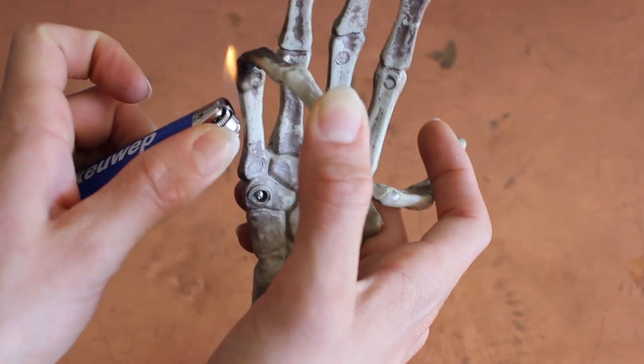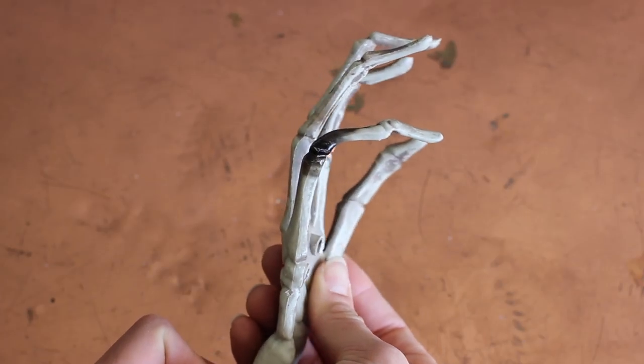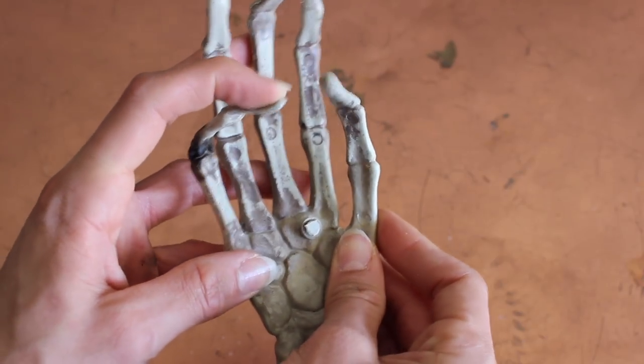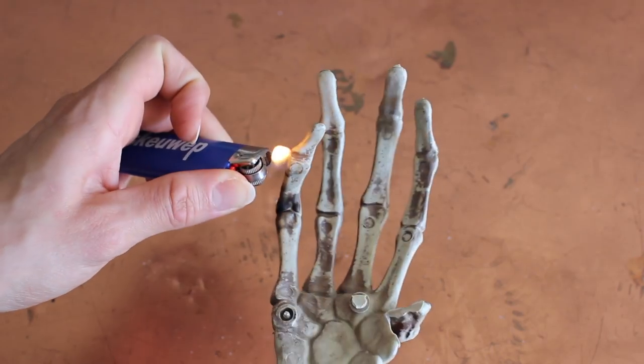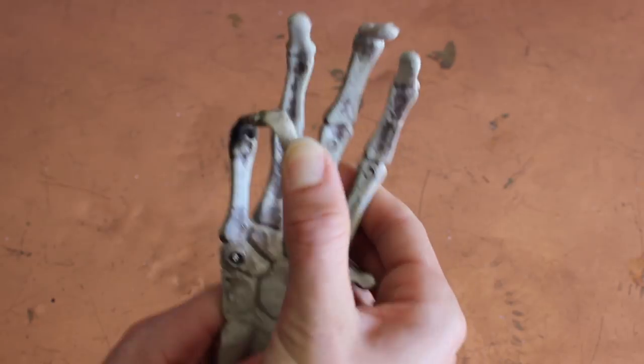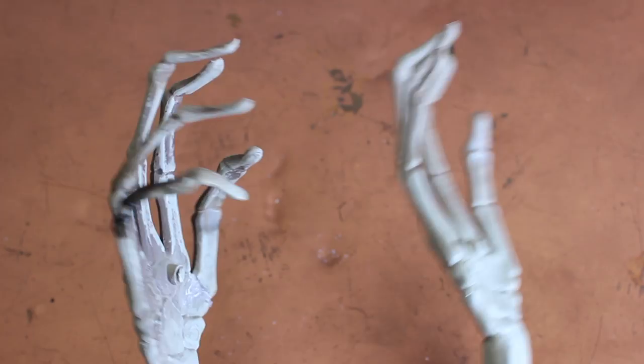So I took a lighter and I had a mask on, and you should do this with supervision if you're not old enough to be using fire. But I just kind of melted and bent the hand how I wanted it to look around the rose. I should have used a heat gun, but I didn't have one, so I just stuck with a lighter. If you don't mind how the hand looked when you first got it, you don't need to do this step.